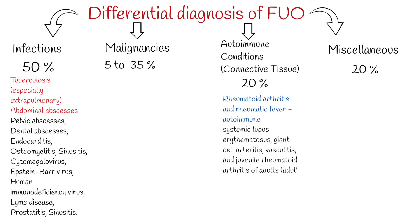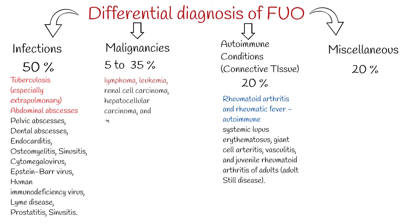The most common neoplastic causes are lymphoma, leukemia, renal cell carcinoma, hepatocellular carcinoma, and metastatic carcinomas. However, the incidence of neoplastic causes of FUO has been decreasing, probably because they are being detected earlier by ultrasonography and CT during initial evaluation.